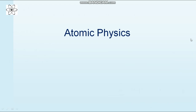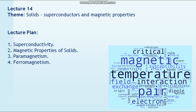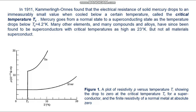This is Atomic Physics Lecture 14 on solids: superconductors and magnetic properties. The lecture plan covers first superconductivity, second magnetic properties of solids, third paramagnetism, and fourth ferromagnetism.